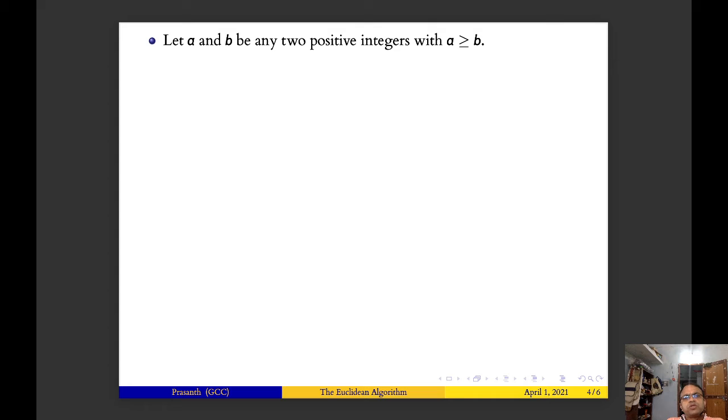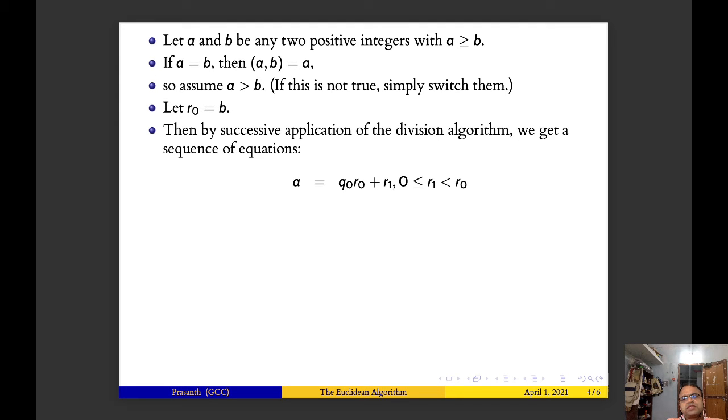Let a and b be any two positive integers with a greater than or equal to b. If a equals b then the gcd of a,b equals a, we have nothing else to say. So assume that a is greater than b. If a is not greater than b then b will be greater than or equal to a, so the process is similar by replacing a in this result by b. Let r₀ equal b. Then by the successive application of division algorithm we get a sequence of equations: a equals q₀r₀ plus r₁ where 0 less than or equal to r₁ less than r₀.